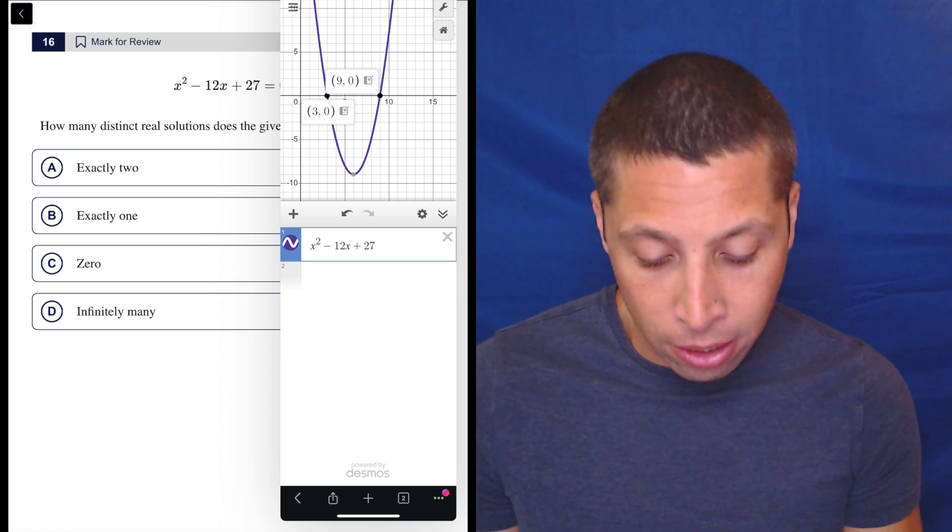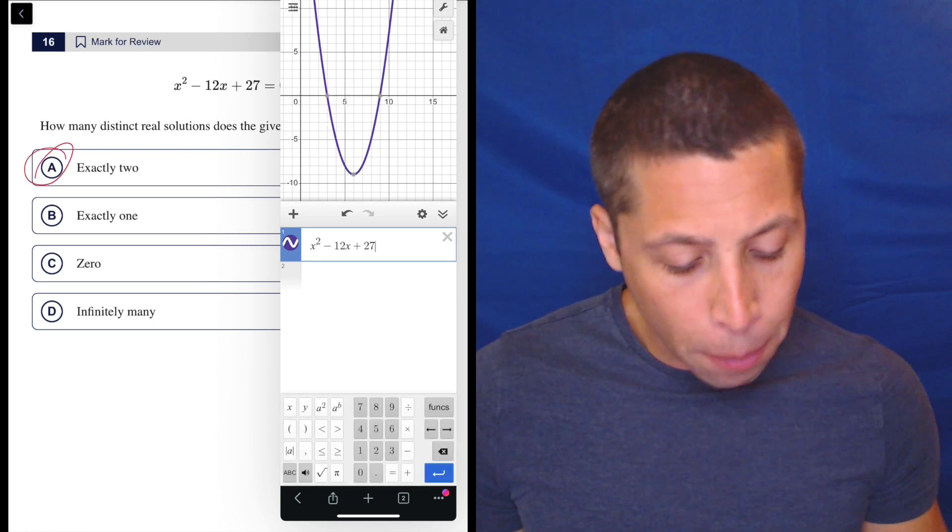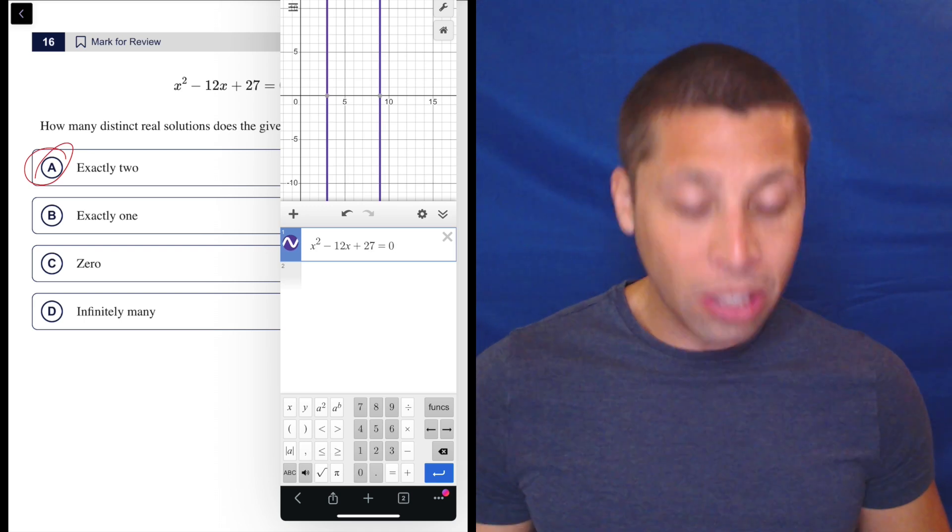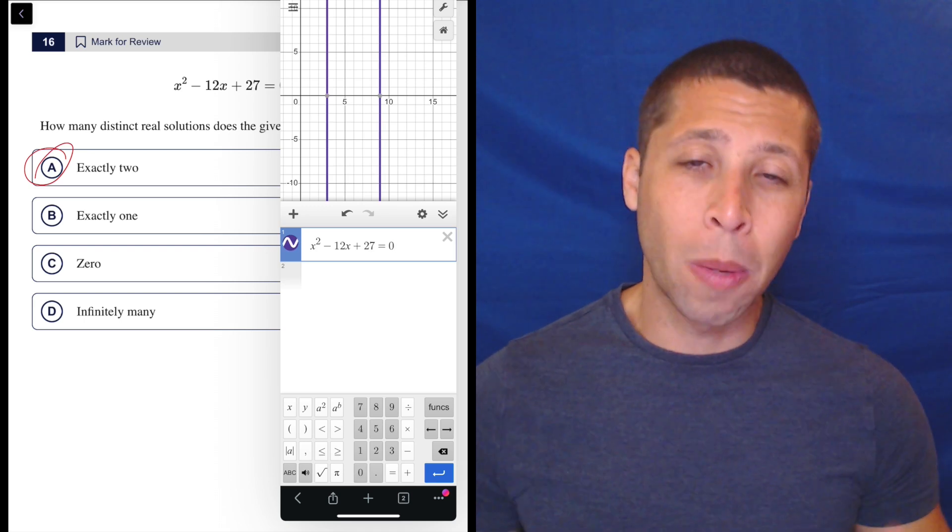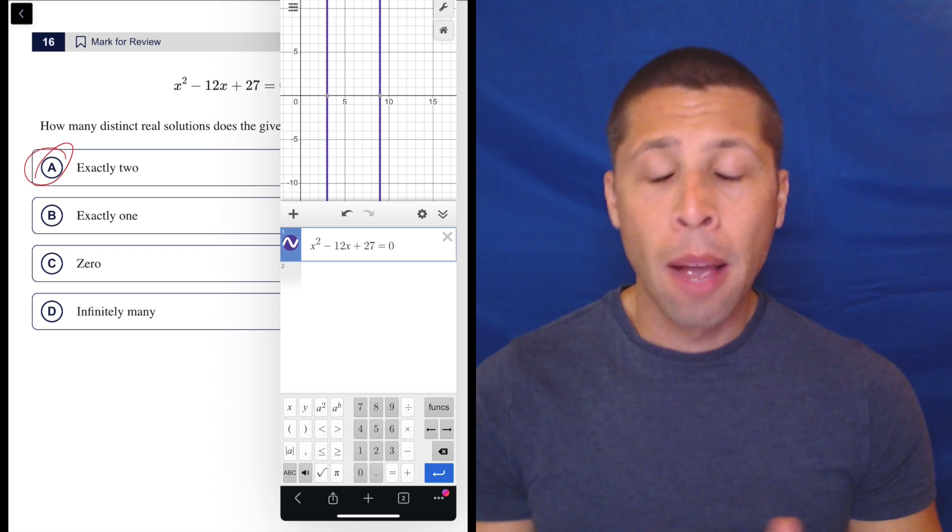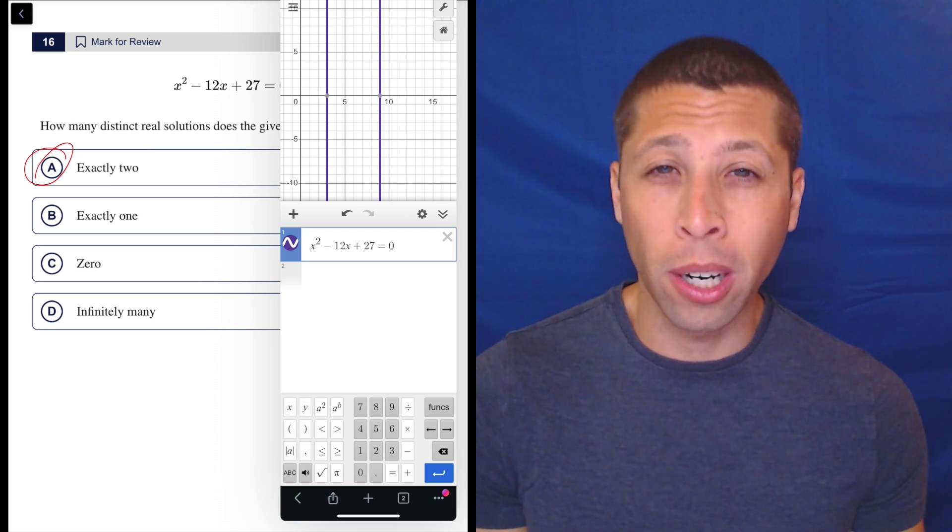So that's it. There are exactly two. I'm done. Now, a couple other things. If we had added the equal zero, we still would see that there are two solutions, but now they're going to look like vertical lines because now what we're telling Desmos to do is solve this equation for us.